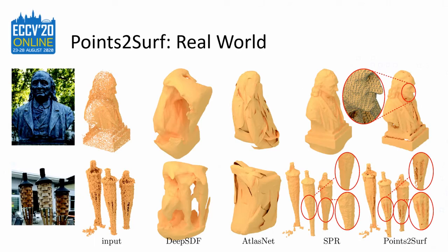Here are two examples of real-world point clouds. The upper one is made with structure from motion and the lower one is from a multi-view dataset. You can again see that DeepSDF and AtlasNet don't generalize well. Poisson reconstruction is pretty good but loses some details like the sticks of the torches.